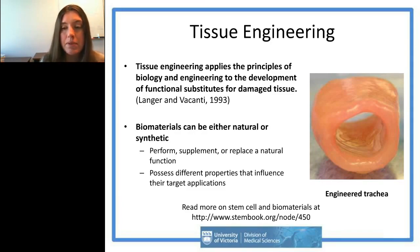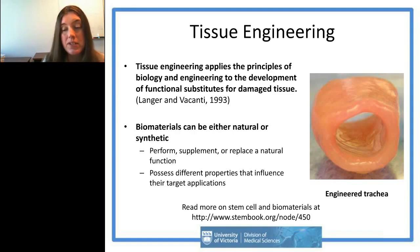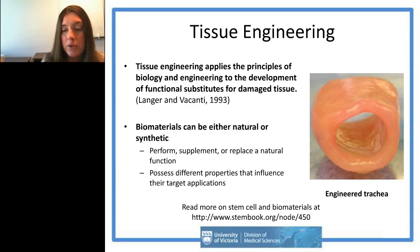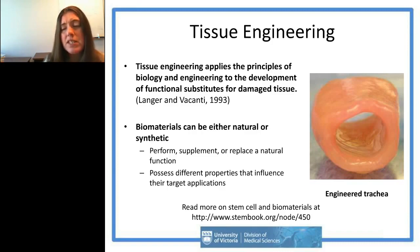An example is an engineered trachea shown on the slide. With engineered tissues, you combine cells with biomaterial scaffolds and chemical cues like growth factors or small molecules like retinoic acid to replicate the structure and cell types found in healthy tissue. If you want to read more, I wrote a book chapter on this available through the Harvard Stem Cell Institute at stembook.org.